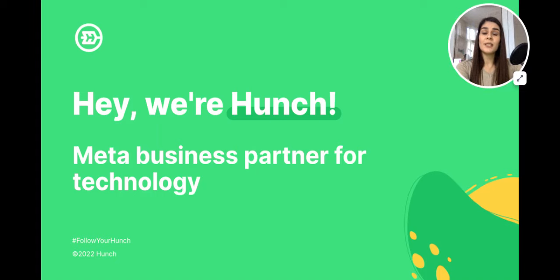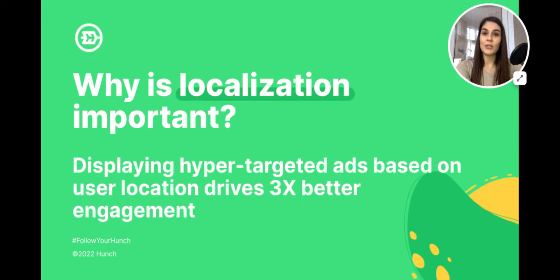For those of you who don't know us, Hunch is a Meta business partner for technology. We're heavily involved in the space of creative enhancement of basically everything you do on paid social, as well as campaign automation.